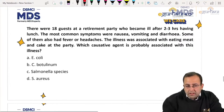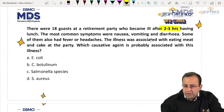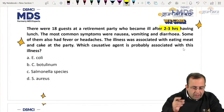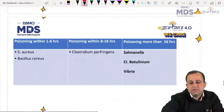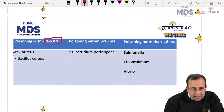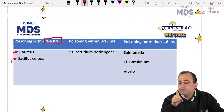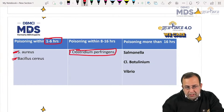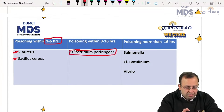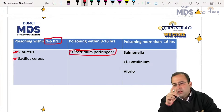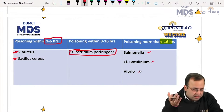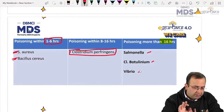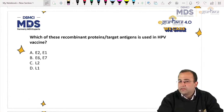Next question: 18 guests at a retirement party became ill 2–3 hours after having lunch with nausea, vomiting, diarrhea. Illness within one to six hours — Staph aureus and Bacillus cereus. Poisoning at 8–16 hours — Clostridium perfringens. More than 16 hours — Salmonella, Clostridium botulinum (canned food poisoning), and Vibrio. Remember this table.